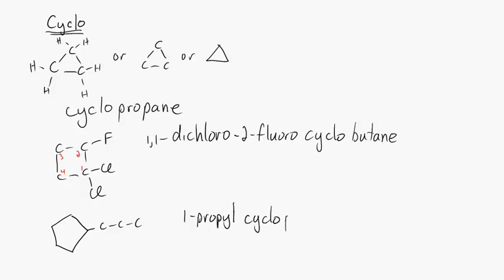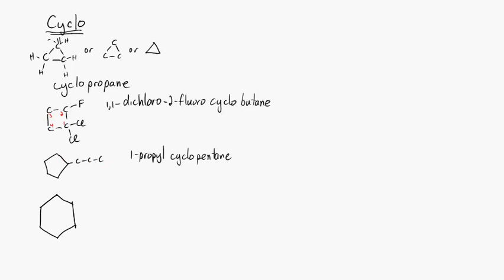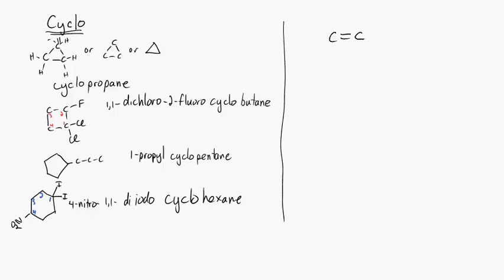Five carbons, cyclopentane with a propyl group on. Here's cyclohexane, diiodo. Give it 1,1-diiodo. And that makes the nitro on carbon-4. I'm going fast here, so pause if you need to.